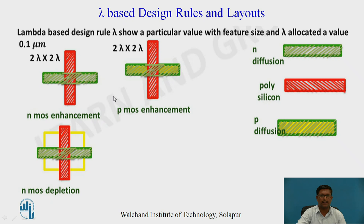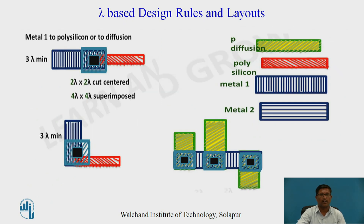For NMOS enhancement, PMOS enhancement, and NMOS depletion, the lambda rules are as follows. The green color represents N diffusion and the red/orange color represents polysilicon. When polysilicon crosses N diffusion it forms NMOS enhancement — the dimension is 2 lambda × 2 lambda. Similarly for PMOS enhancement, when polysilicon crosses P diffusion it forms PMOS enhancement with dimension 2 lambda × 2 lambda. For NMOS depletion there is a P-well shown by the yellow dotted line, and the size of this P-well is 6 lambda × 6 lambda.